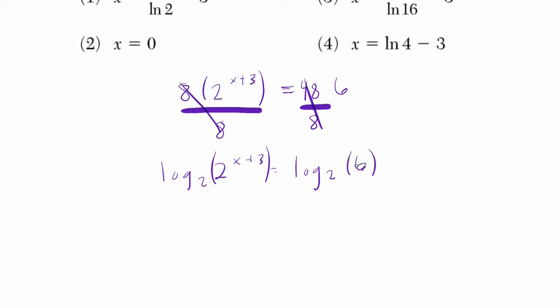Now I chose a base 2 because that will essentially cancel this base out right here. Because this is saying the log base 2 of 2 to the x plus 3. It's saying what power of 2 equals 2 to the power of x plus 3, and that's just x plus 3. And that nice canceling out happens because we're using a log with a base that matches the base we're given.